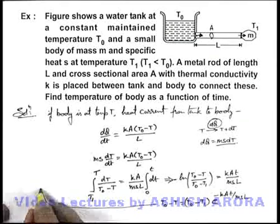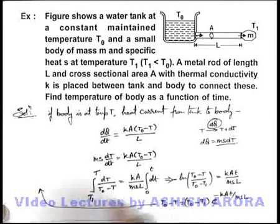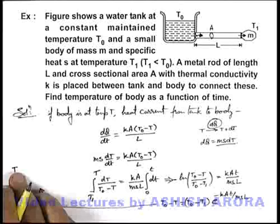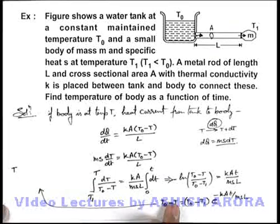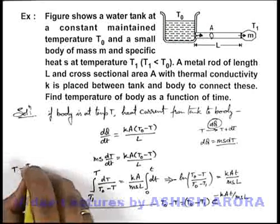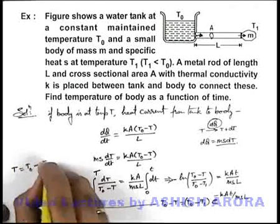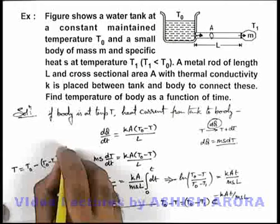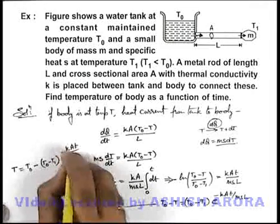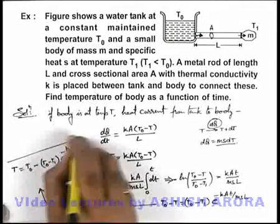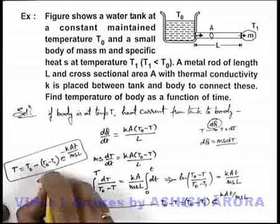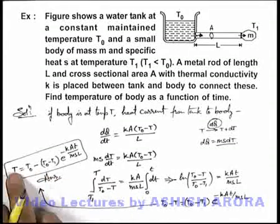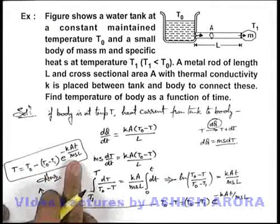We further simplify this expression, this will give us T, the body temperature which we are required to find, which is as a function of time. This will be T = T₀ - (T₀ - T₁)e^(-kAt/msL). This is the final expression we are getting which is the answer to our problem, that is the body temperature as a function of time.